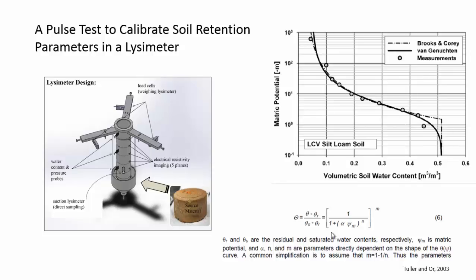We'll also need to know the residual water content under residual conditions, and the saturated water content, which would be about 0.52 for this soil. So that would be four parameters total. We would probably also want to know the saturated hydraulic conductivity if we were going to simulate the water flow through the soil using the Richards equation.